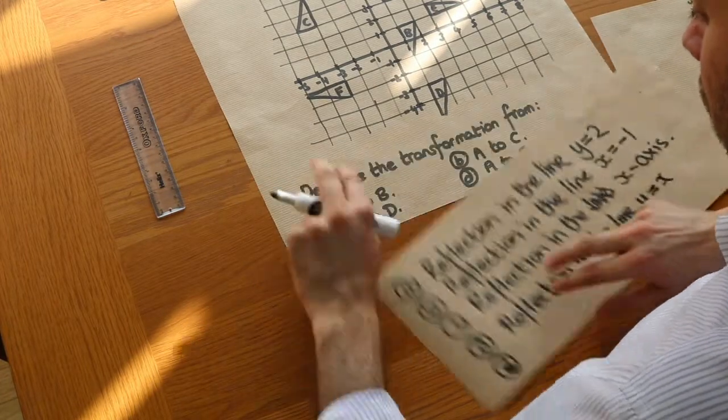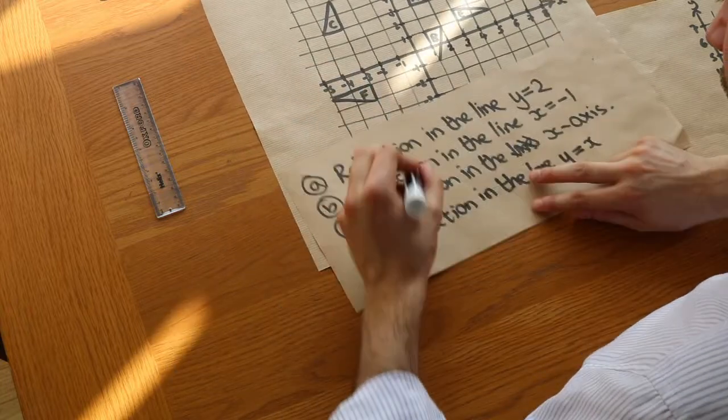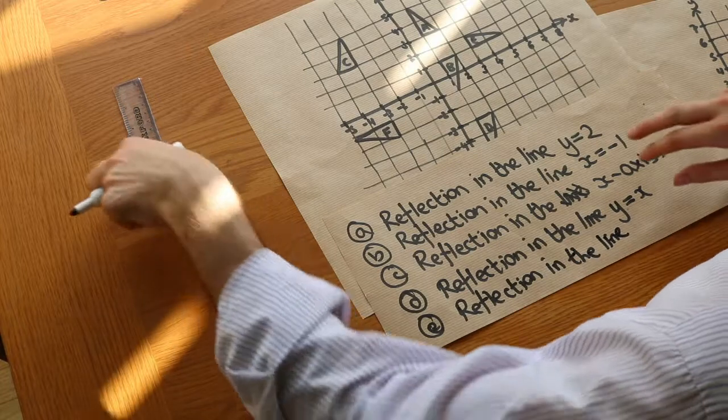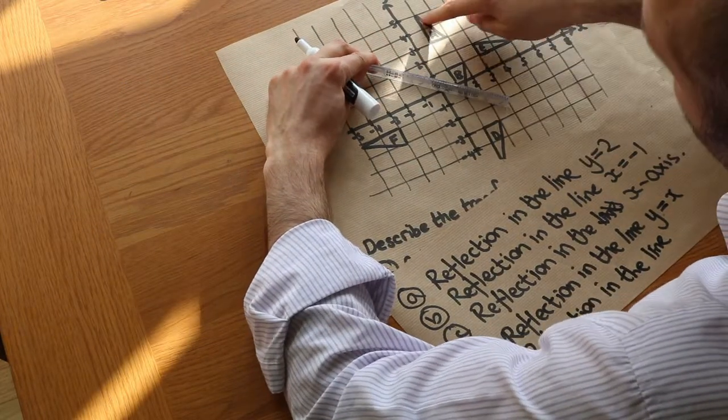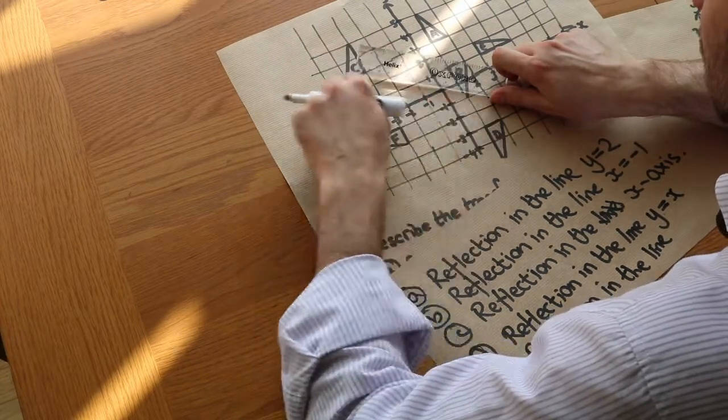And the last hardest one, we want the reflection from A to F. So A to F here. So it's a reflection in the line. Now, the line this time is like this. So this is a bit more unusual to get from A to F like this. Now, let's look at the different points on this particular line.